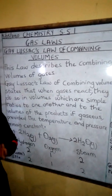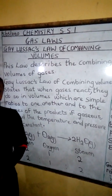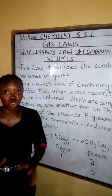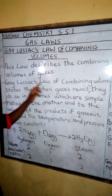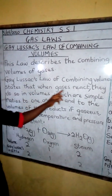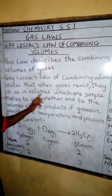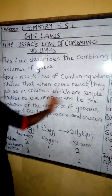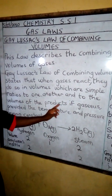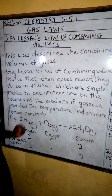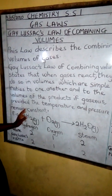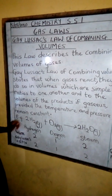This law describes the combining volumes of gases, and this law is only applicable to gases. Gay-Lussac's Law of combining volumes states that when gases react, they do so in volumes which bear simple ratios to one another and to the volumes of the products, if gaseous, provided the temperature and pressure remain constant.